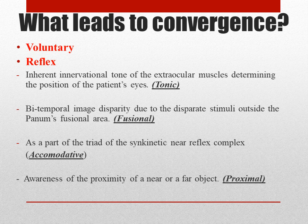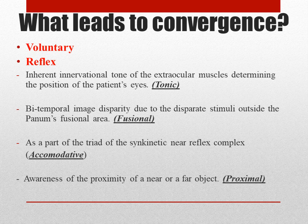Next is accommodative convergence. When we are looking at a near object our eyes are accommodating, and during that accommodation our eyes are converging as well. This is because both the ciliary muscles and the medial recti are supplied by the third cranial nerve. As a result, these two phenomena take place together, which is called the accommodative convergence reflex. Along with that there is another phenomenon called miosis or pupil constriction. These three together form the near triad or the synkinetic near reflex. The last type is proximal convergence, which is due to the awareness of the proximity of a near or far object.